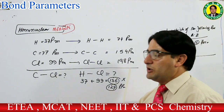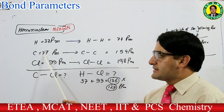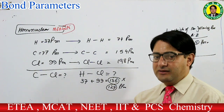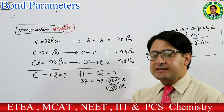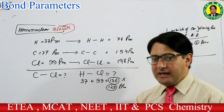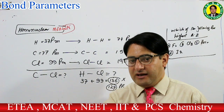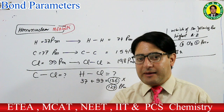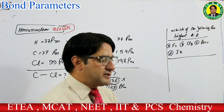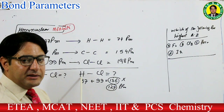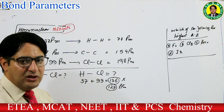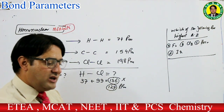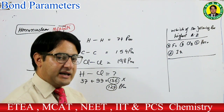مثال: carbon اور chlorine کی bond length — carbon کا covalent radius 77، chlorine کا 99، ان کا جمع 176 — لیکن actual bond length 176 سے کم ہوگی کیونکہ carbon اور chlorine میں electronegativity difference ہے، partial negative اور partial positive آئے گا، ایک دوسرے کو attract کریں گے، bond length decrease ہو جائے گی۔ H کا radius 37، Cl کا 99 — sum 136 لیکن practically 127 ہوتی ہے۔